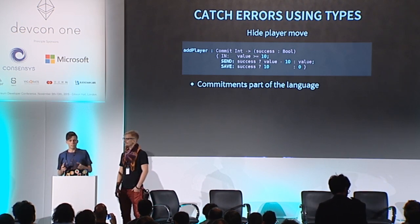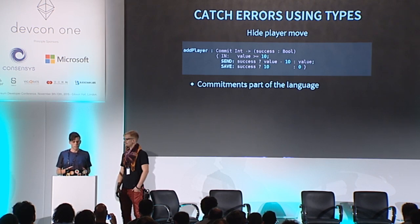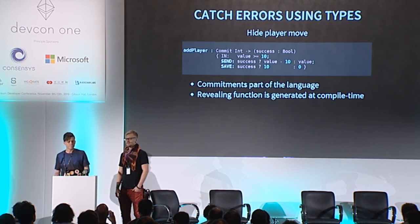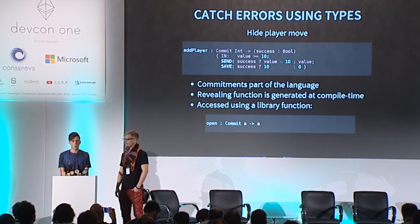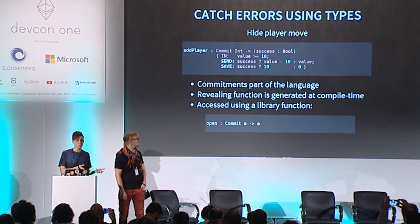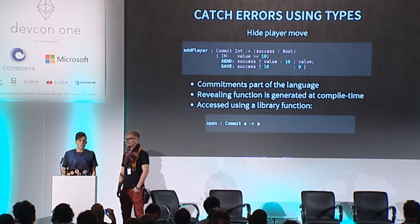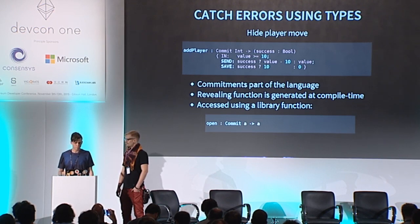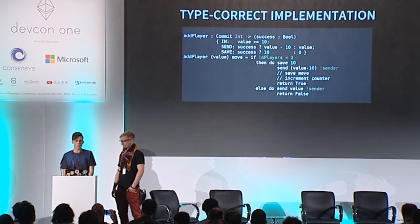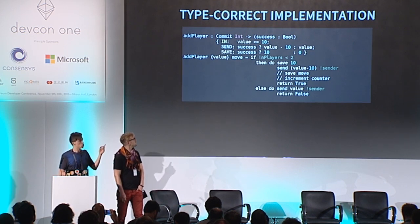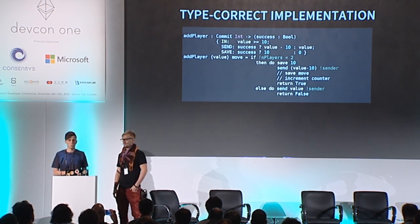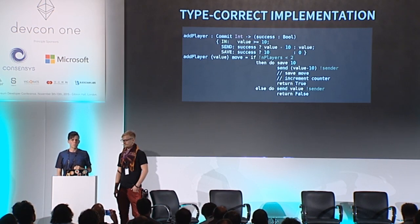The way we solve this is by annotating the types of secret values with 'commit', as you can see. This indicates to the compiler that this value should be treated as a commitment, and the compiler will automatically generate a function for the sender to reveal it at a later time. Once revealed, it can be accessed in code using the standard library 'open' function, which takes any commitment and returns the value. If it hadn't been revealed prior to calling 'open', then 'open' will fail, return all ether to the sender, and abort execution.